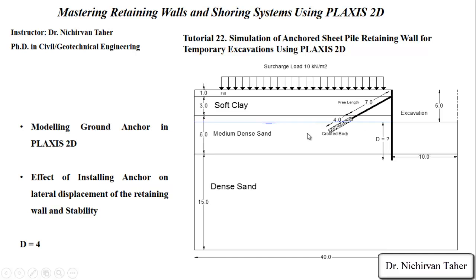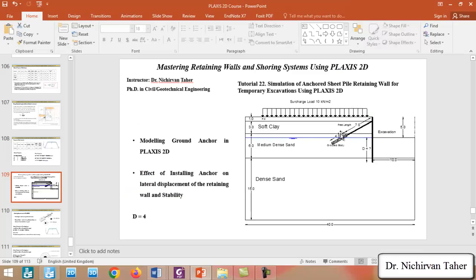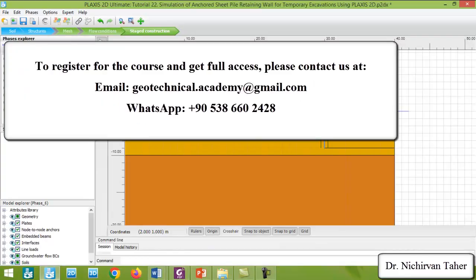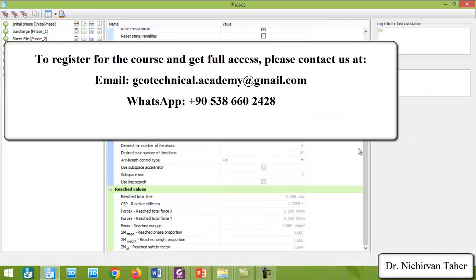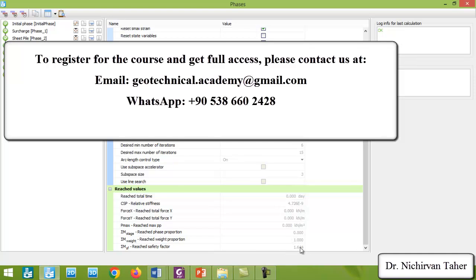The ground anchor is installed at this location — it is 11 meters long: the first seven meters is a free length and the last four meters is a grouted body. The factor of safety in this example is about 1.64, which has increased considerably compared to the previous example.